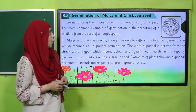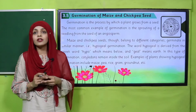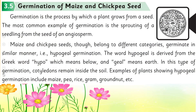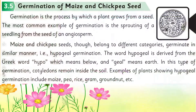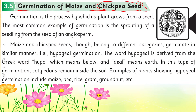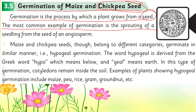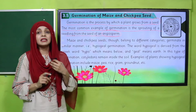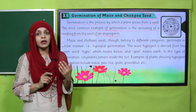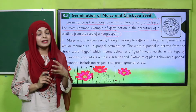Please open the germination of maize and chickpea seed in chapter number three. Germination is the process by which a plant grows from a seed — a process in which the plant comes out from the seed. The most common example of germination is the sprouting of a seedling from the seed of an angiosperm. When you put a seed in the ground, after a few days a tiny plant emerges from it — this is common in angiosperms or flowering plants, and this is called germination.